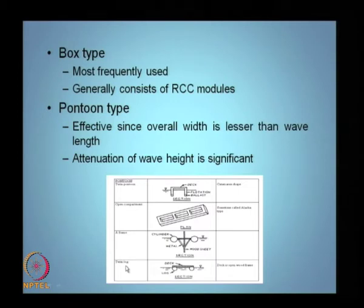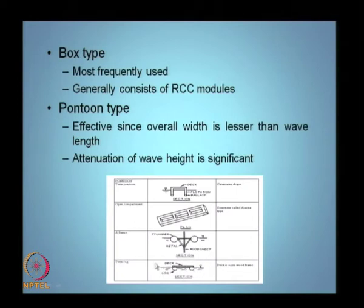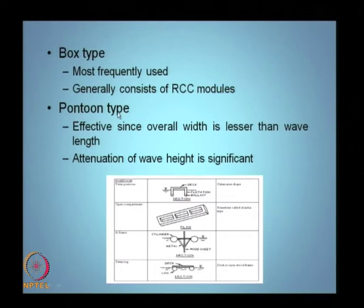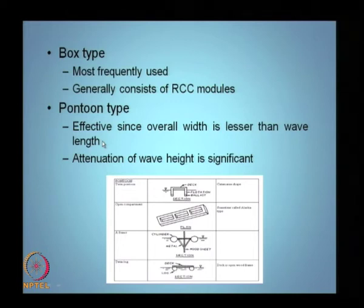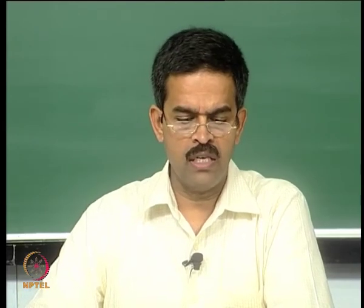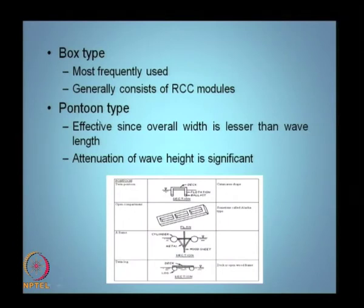The pontoon type floating breakwater is effective because its overall width is much less than the wave length — practically half the wave length. Because of this, the attenuation of wave height is significant, meaning the wave height reaching the lee side of the breakwater is significantly reduced.